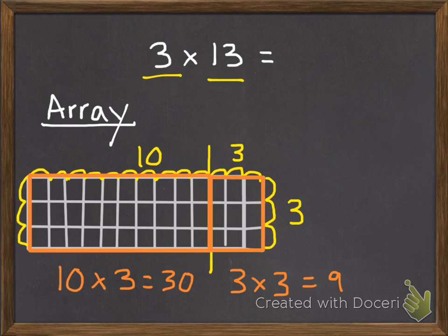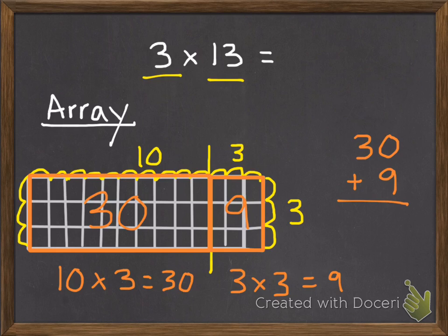So 10 times 3 equals 30, and 3 times 3 equals 9. In the bigger half of my box I have 30, and in the other little part I have 9. Then I just have to add those together to get how many boxes there are in my whole array. So 30 plus 9 equals 39. That is the product — my answer.